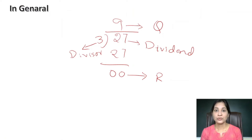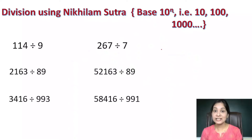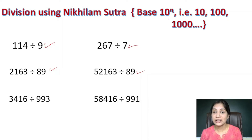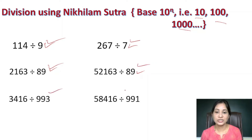Let us go for a particular problem where the divisor is near to the base 10. I am taking numbers divided by 9 or 7 — single digit numbers — and here 2-digit numbers like 89, and 3-digit numbers like 993 and 991. All divisors are near to the base 10, meaning the base may be 10, 100, or 1000.